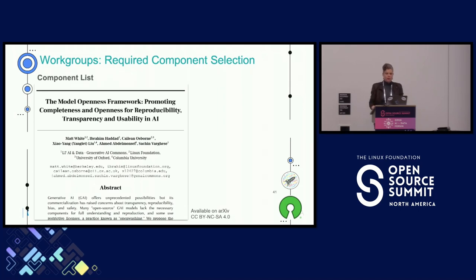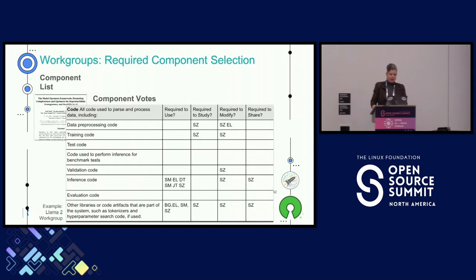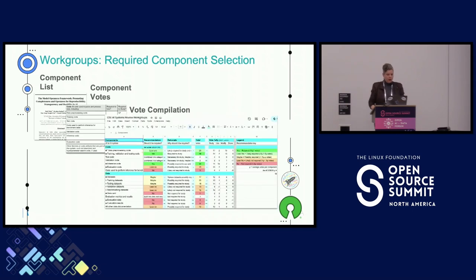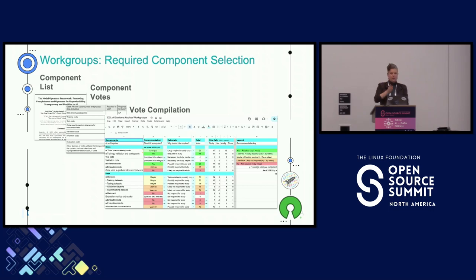What did the working groups do? We started with the Model Openness Framework — an incredibly helpful, foundational document. We then created a voting procedure in each working group: on the left are the components, then the question of whether that component is required to use, study, modify, and share. People voted by initial for transparency so you can see who voted for what and what's considered essential. I compiled these results and created a Likert scale according to the number of votes per component, and then posted components into categories for public comment.